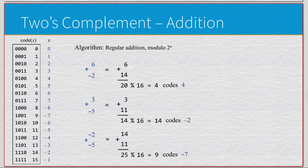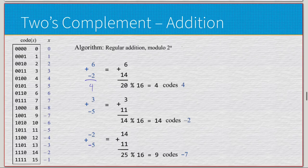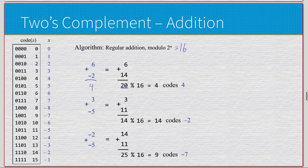Now let's do some actual math. Six plus negative two — looking at it, this should be four. Six is positive, so it's just 6. Negative two: we need the complement, so 16 minus 2 is 14. Six plus 14 is 20. We do modulo by 2 to our word size which is 16: 20 modulo 16 equals 4, which codes as 4 — exactly what we wanted.